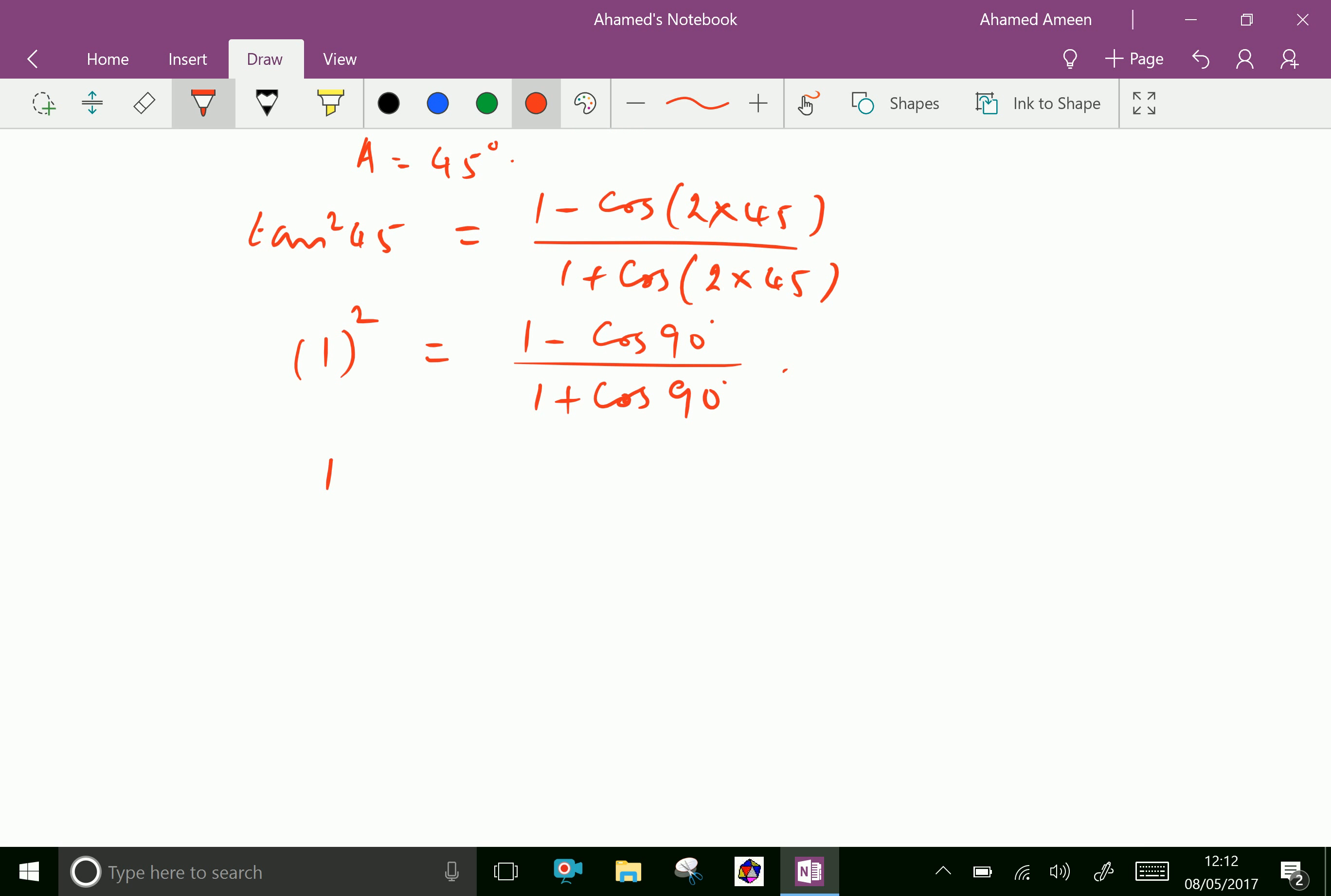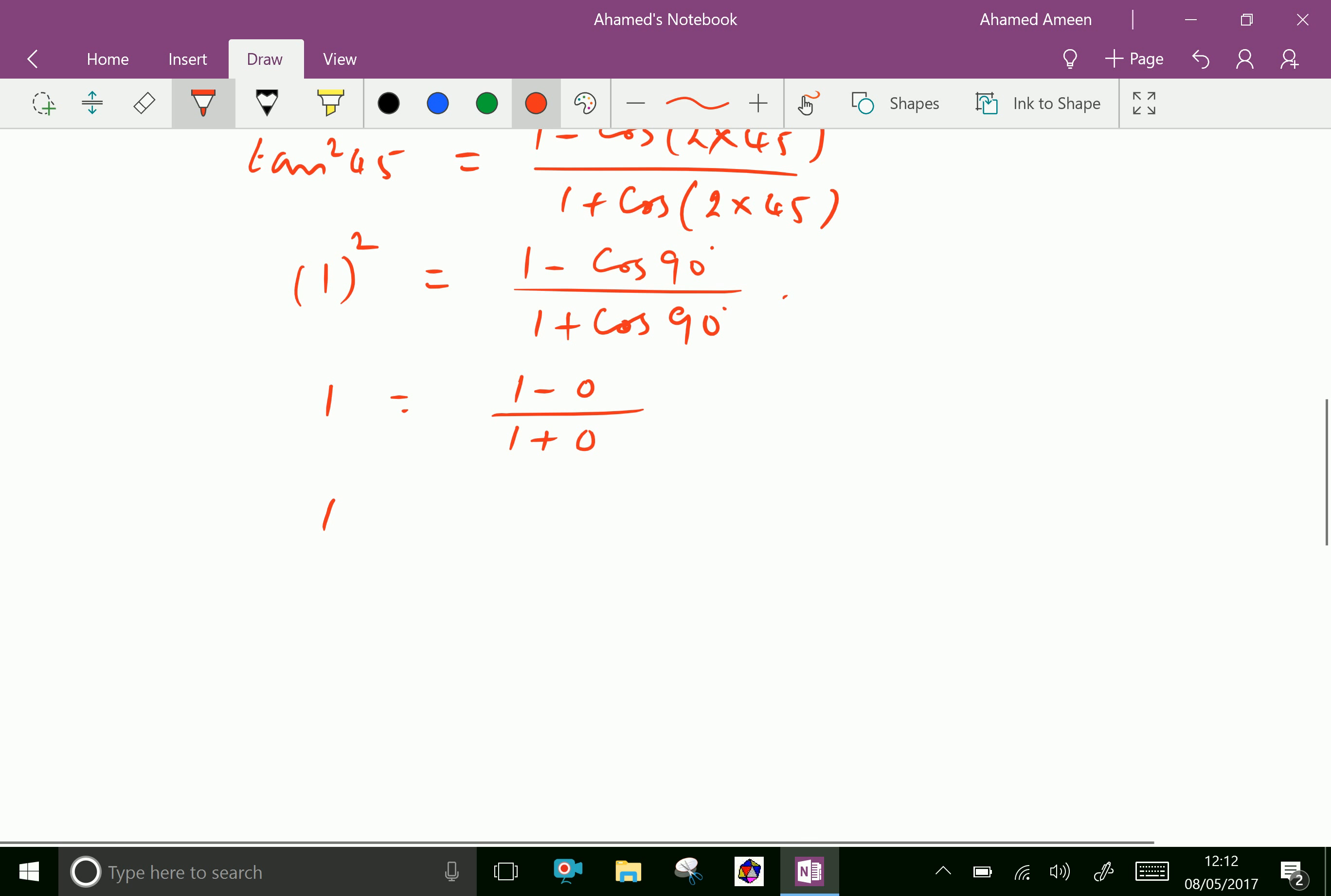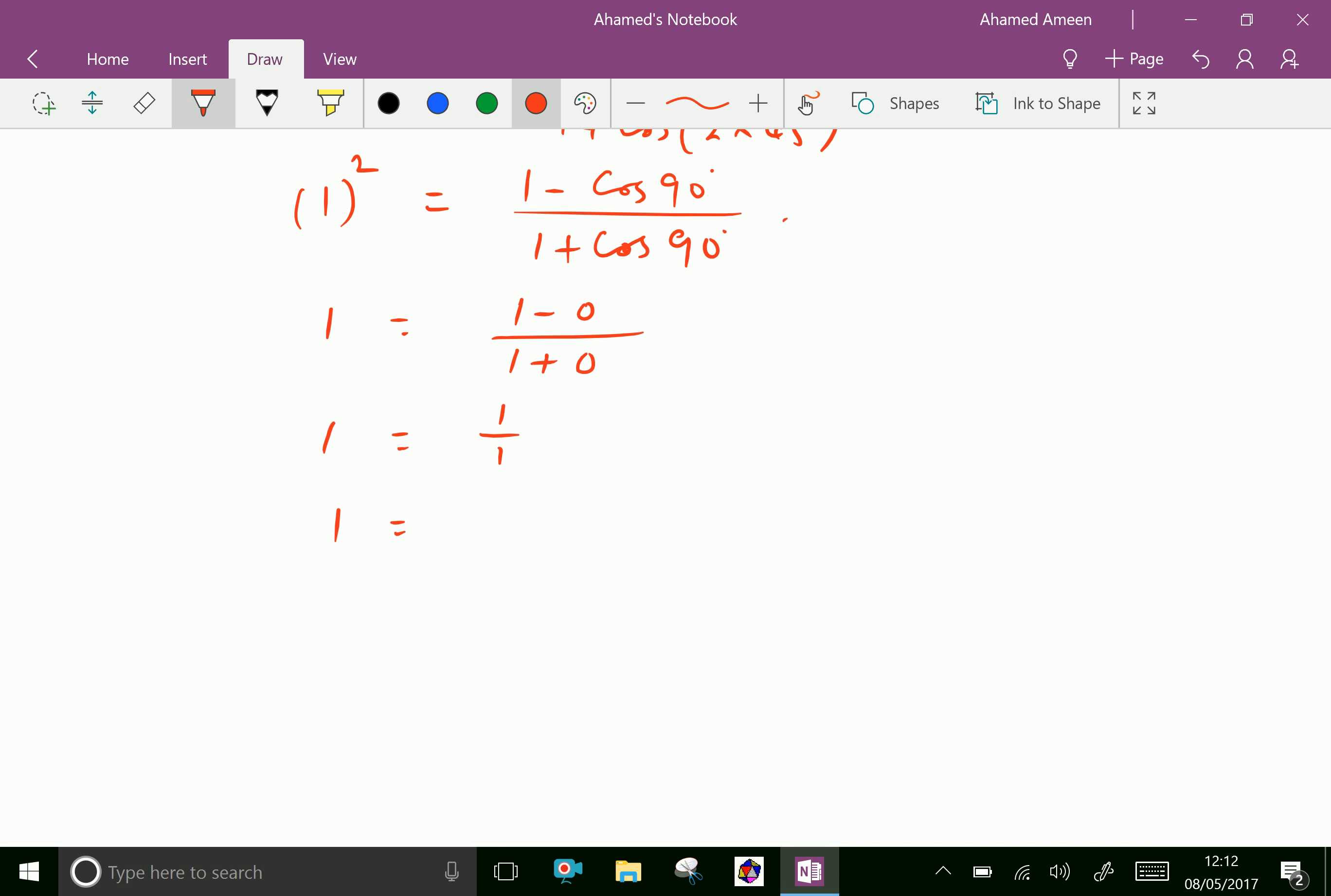1 squared is 1. 1 minus cos 90, which is 0, over 1 plus cos 90, which is 0, equals 1 over 1, which equals 1. So 1 equals 1, verified.